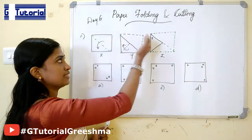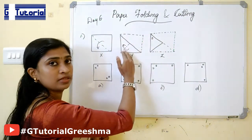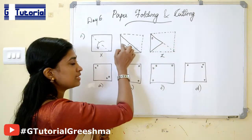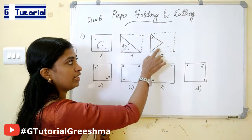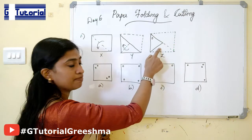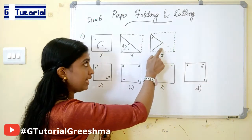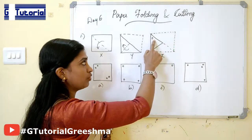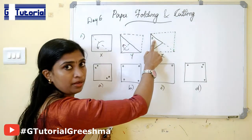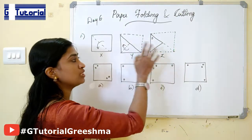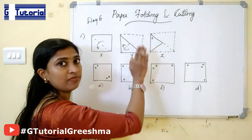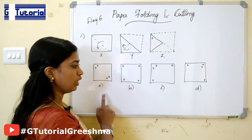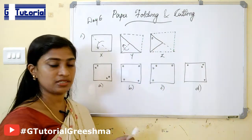First the paper is folded like this, then the paper is folded in this direction. Finally the paper is made like this, and then a small circular cut is made on the paper. We are asked to find how this paper looks when it is unfolded — which option, A, B, C, or D, is correct.